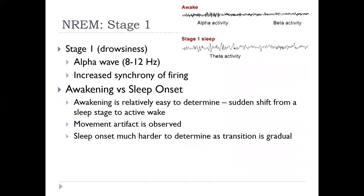When we talk about non-REM stage one, we see a very drowsy phase. You might see some beta activity from being alert, but you generally see it moving to alpha — a very relaxed state. Stage one sleep shows some theta activity here and there, but generally you see it go from beta to alpha, with alpha representing real relaxation. We also see increased synchrony in firing, but not completely synchronous.